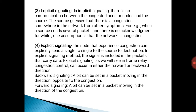Third is implicit signaling. In implicit signaling, there is no communication between the congested node and the source. The source guesses that there is congestion somewhere in the network from symptoms. For example, when the source sends several packets and there is no acknowledgement for a while, one assumption is that the network is congested.